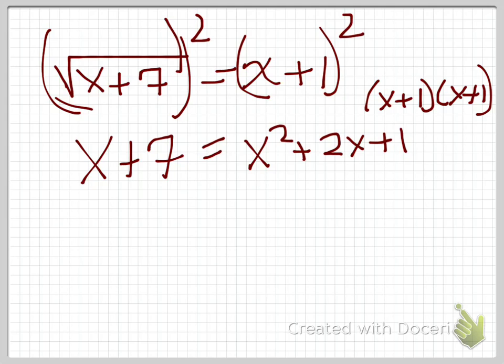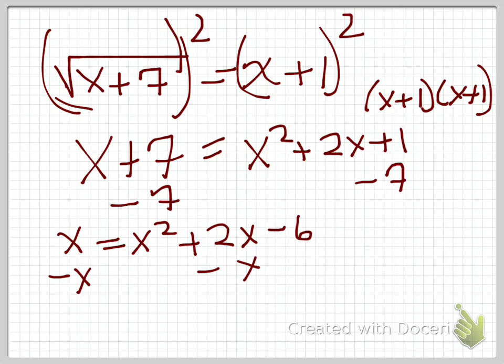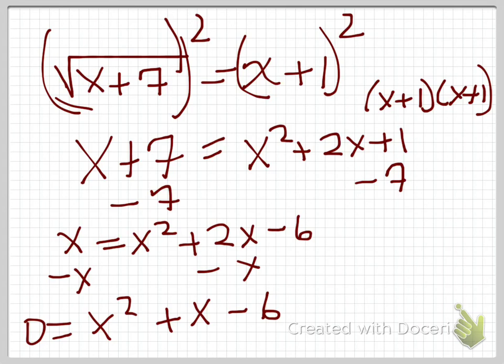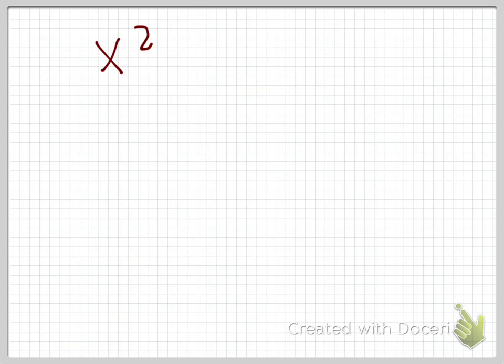Now that you have that, let's get the x's all on one side. So let's subtract 7. So now we have x = x² + 2x - 6. And then we are going to subtract x. Which leaves us with x² + x - 6 all equals 0. I am going to move to another screen so I have a little bit more room. And that means x² + x - 6 = 0.